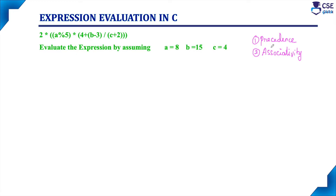Precedence is nothing but, in an expression, which operator is having the highest priority — that operator should be evaluated first. And associativity is nothing but if more than one operator is having the same precedence, in that case precedence we cannot apply, so we need to go for associativity.